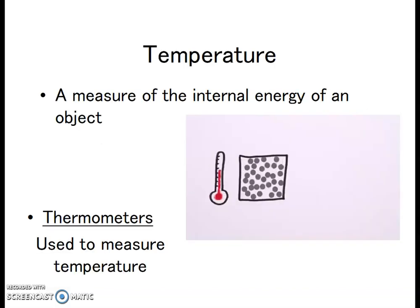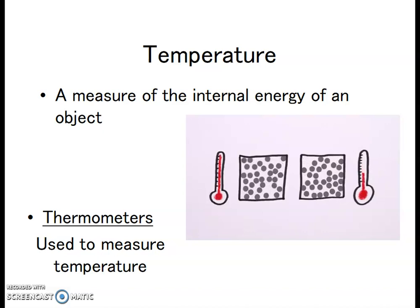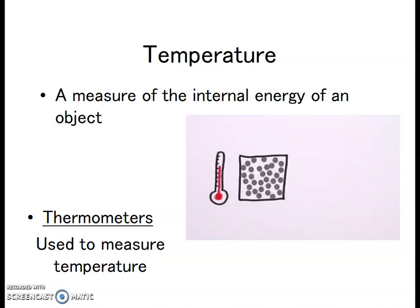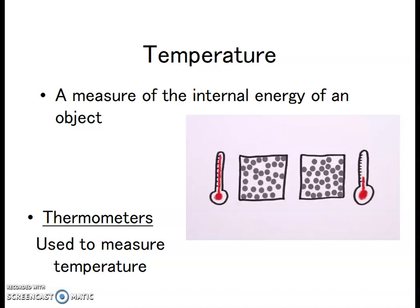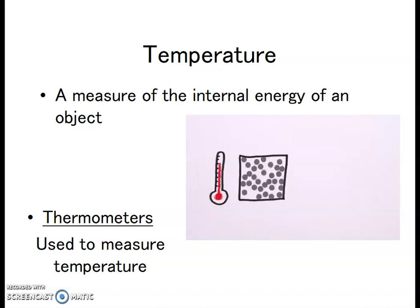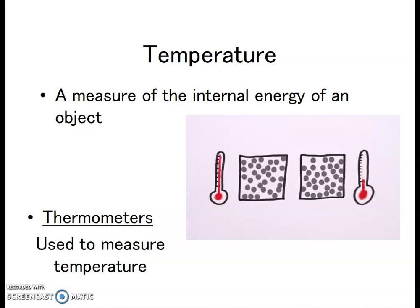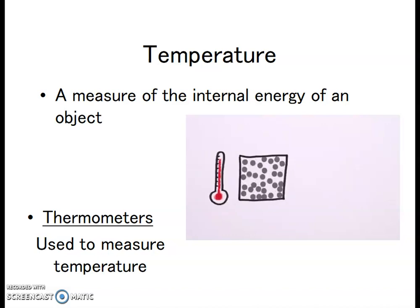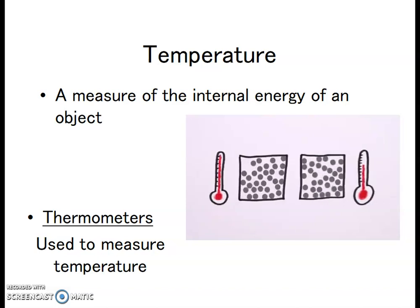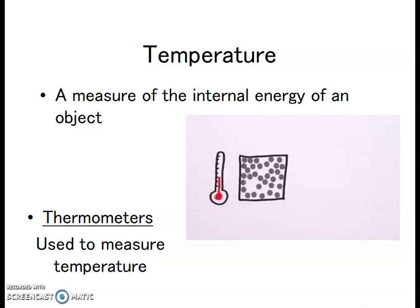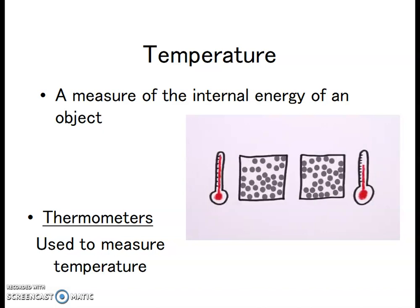So let's take a look. Temperature is defined as a measure of the internal energy of an object. You can see here we have two thermometers measuring the atoms in this box. The box on the left, the atoms are moving much faster. The box on the right, the atoms are moving much slower. When atoms are moving faster, the temperature rises. When atoms slow down, the temperature drops.